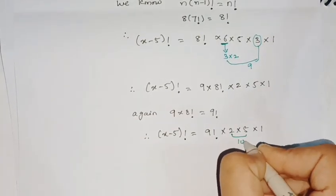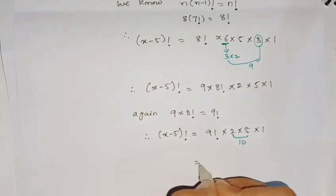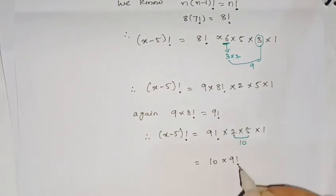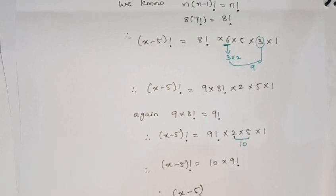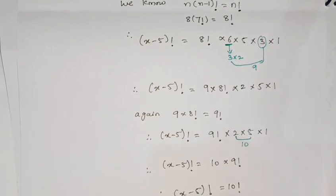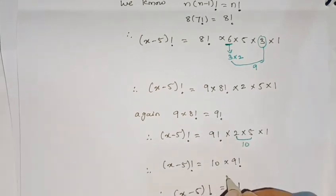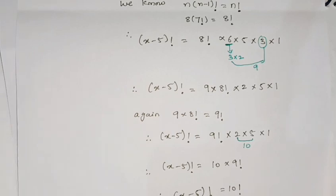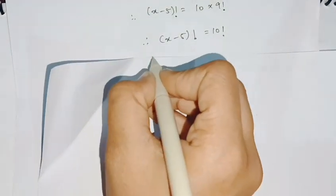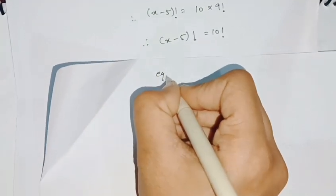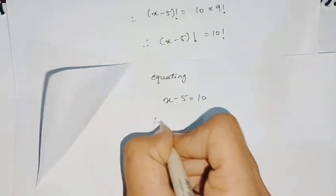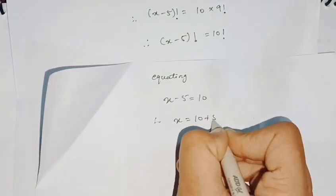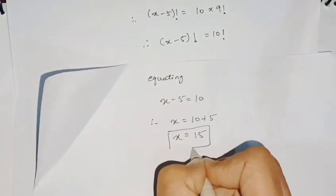Now 2 × 5 = 10, and 10 × 1 = 10, so we can write 10 × 9!, which equals 10!. Therefore (x-5)! = 10!. We can now equate both sides by dropping the factorial sign: x - 5 = 10, so x = 10 + 5, giving us x = 15.